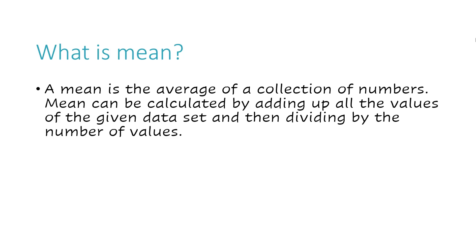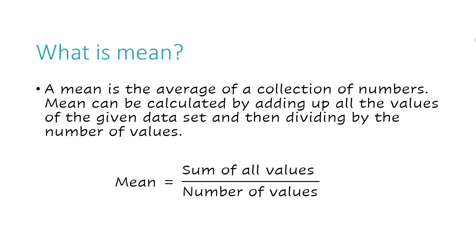What is mean? A mean is an average of a collection of numbers. Mean can be calculated by adding up all the values of a given data set and then dividing by the number of values. A formula for this would look like mean equals the sum of all of your values divided by the number of values that you have.